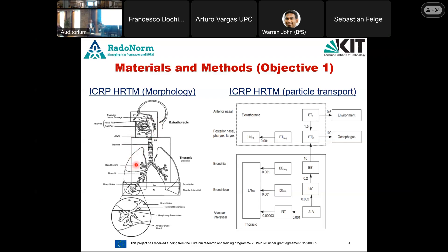The HRRTM is structured in two main regions. The extra-thoracic part consists of ET1, the anterior nasal passage, and ET2, comprising the larynx, pharynx, and mouth. The thoracic part consists of the bronchi, bronchioles, and the alveolar-interstitial region (AI), where gaseous exchange takes place. Material deposited in ET1 moves to ET2 and then to the alimentary tract or to the environment via nose wiping or sneezing, with particle transport occurring similarly in the other regions.